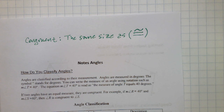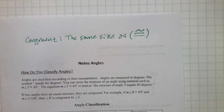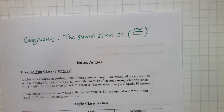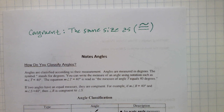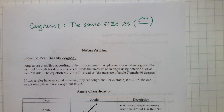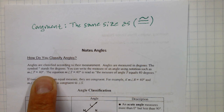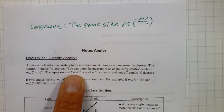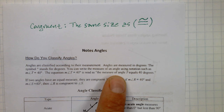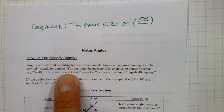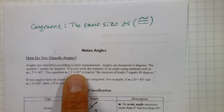We're going to see the word congruent quite a bit. Now let's take a quick review of things we should already know about angles — classifying angles. Angles are classified according to their measurement, and angles are measured in degrees. That little circle symbol, like in temperature, stands for degrees. You can write the measure of an angle using notation such as: lowercase m, angle T, equals 40 degrees. The lowercase m in italics represents the measurement of angle T.